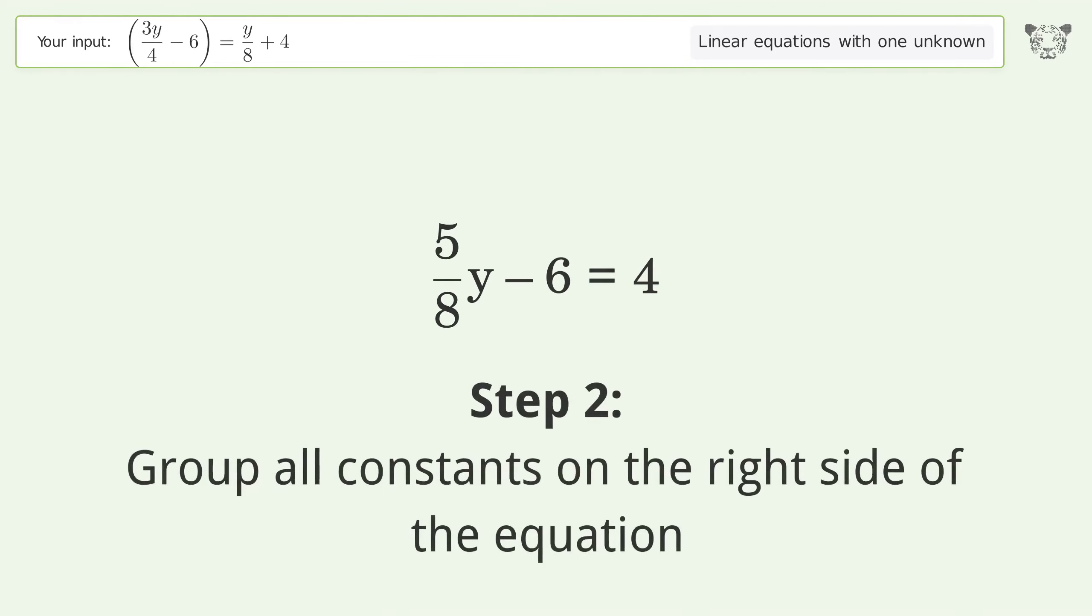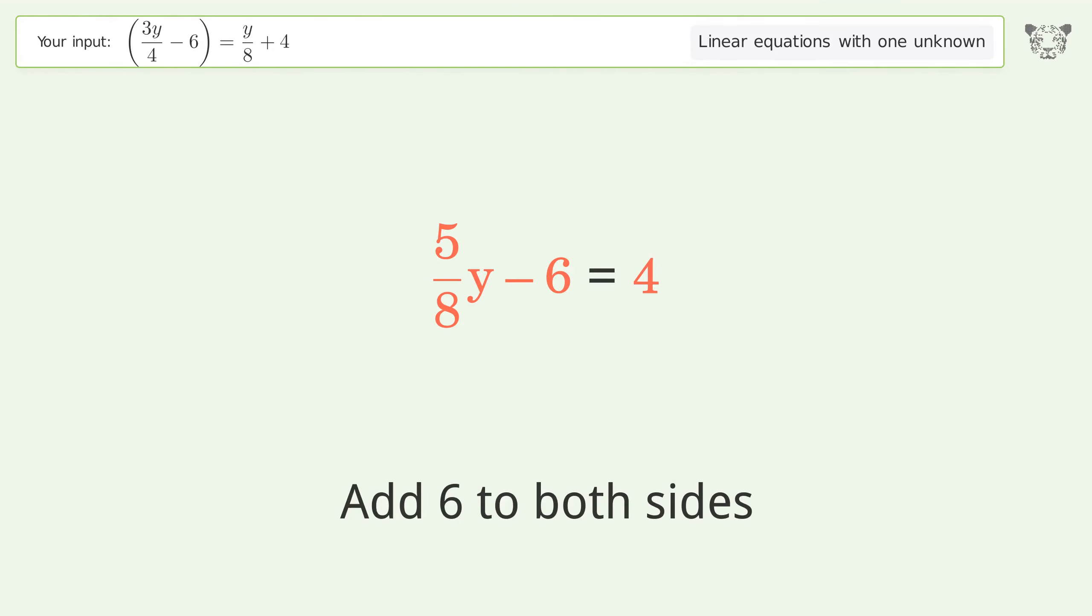Group all constants on the right side of the equation. Add 6 to both sides. Simplify the arithmetic.